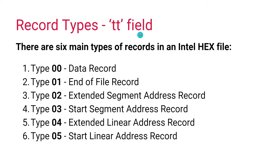Based on the type field, there are six main types of records. When the number is 00 it is a data record; when it is 01 it is the end-of-file record. When the number is 02 and 03 in the type field, it is the extended segment address record and the start segment address record respectively — these are related to segmented memory models. The values 04 and 05 correspond to the flat memory model: the extended linear address record and the start linear address record.